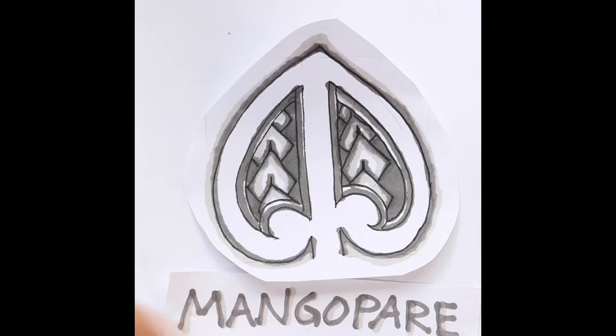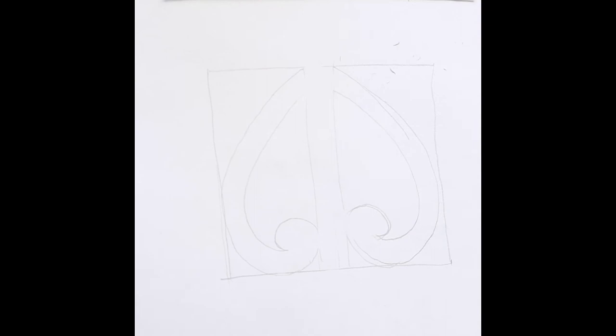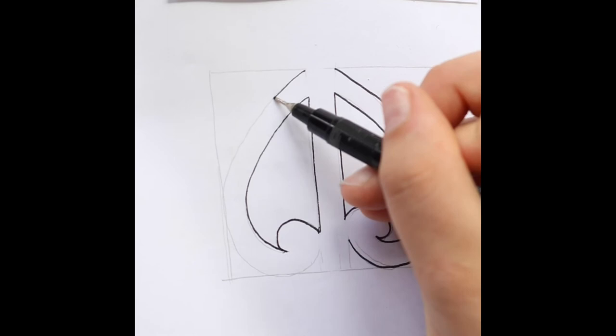We're gonna draw a mangopare. First draw a square then split the middle so it gives you two even rectangles. Draw two korus in these rectangles touching the edges and reflecting each other. Erase the lines which are intersecting and line it. You can connect the korus together or leave them separate. I have connected mine together and that is the base of your design.